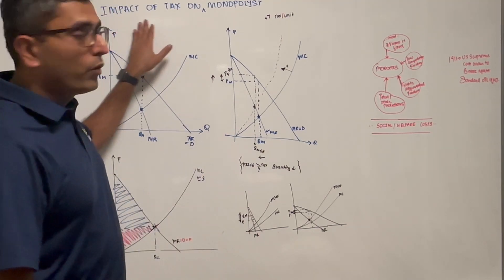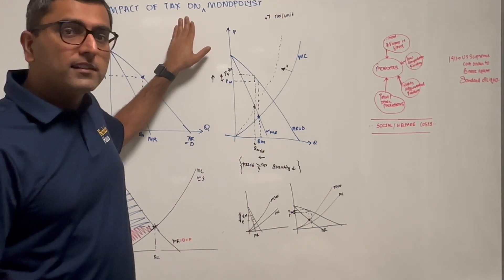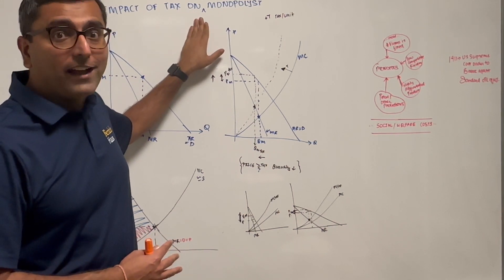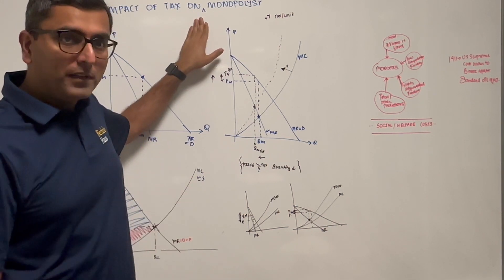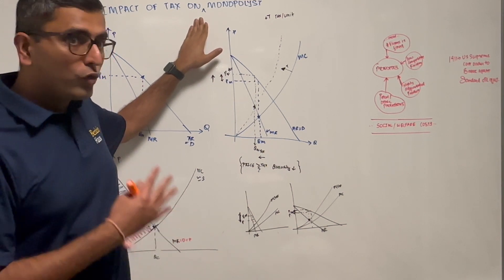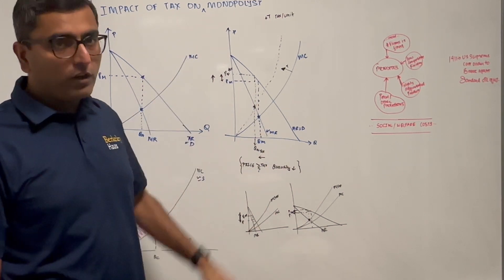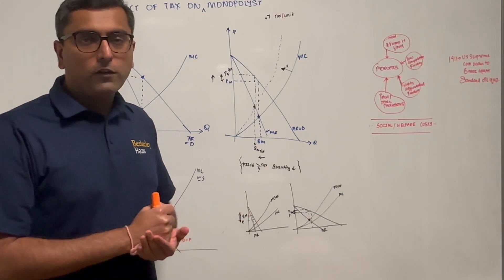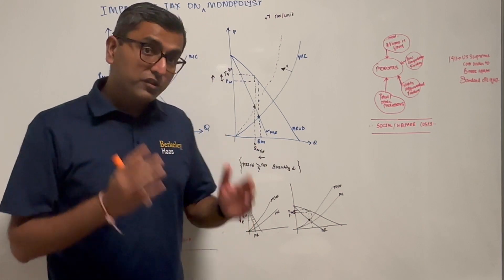Let's learn about how a monopolist reacts when a tax is introduced. Say you have a monopoly and the government decides to rule over that monopoly, saying you have a lot of market power. I'm going to introduce a tax for every unit of an item that you sell.